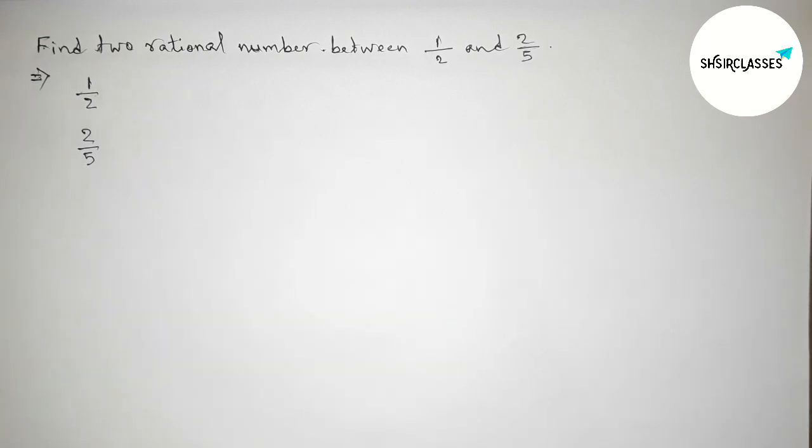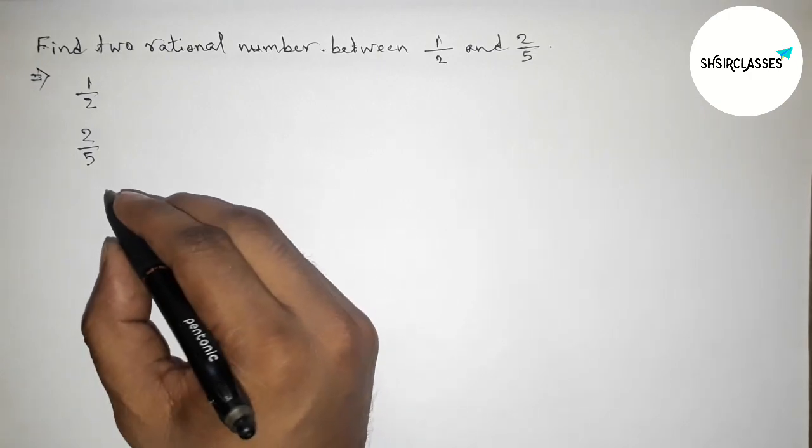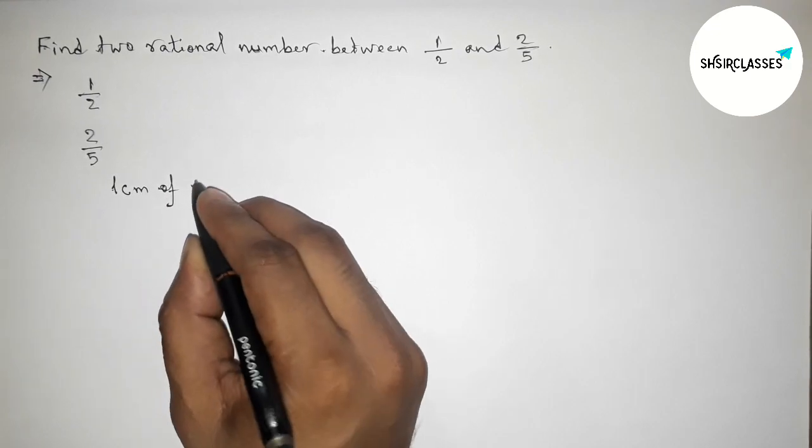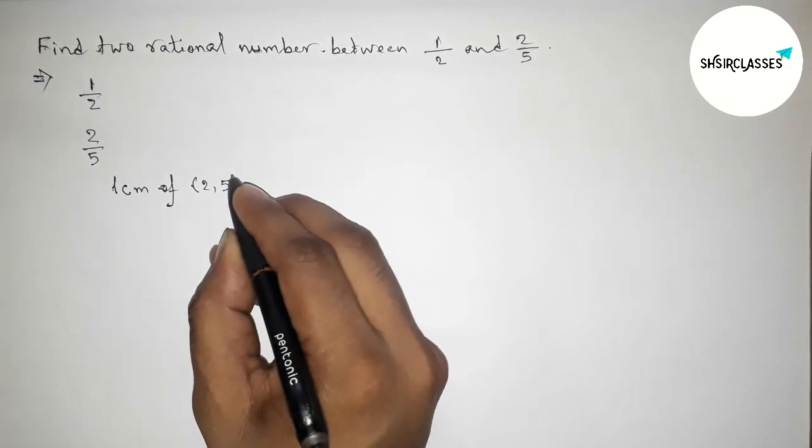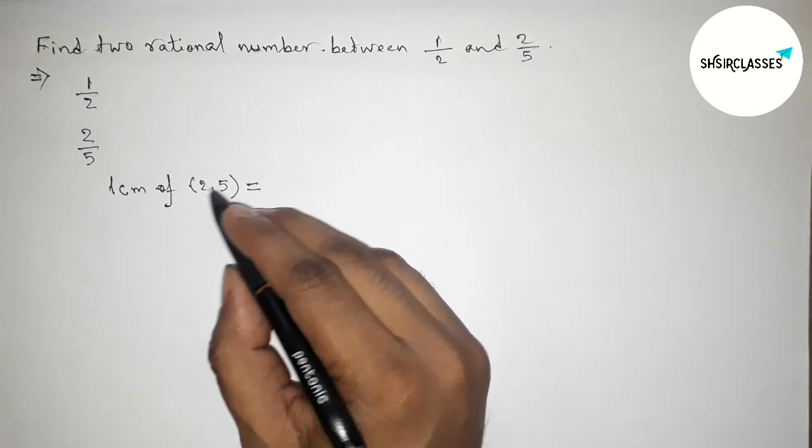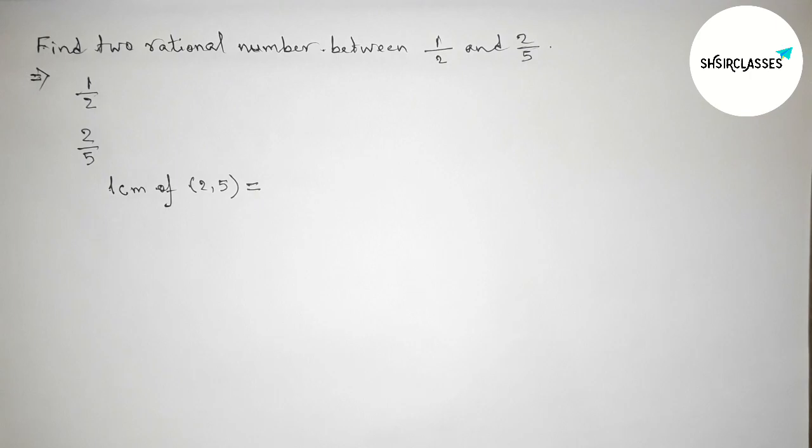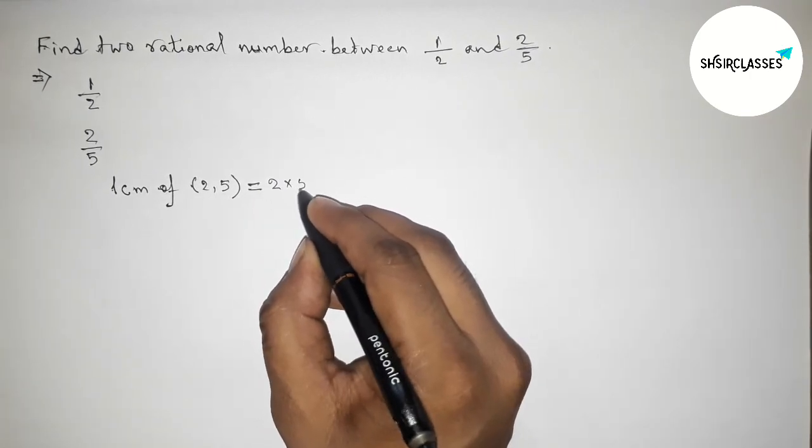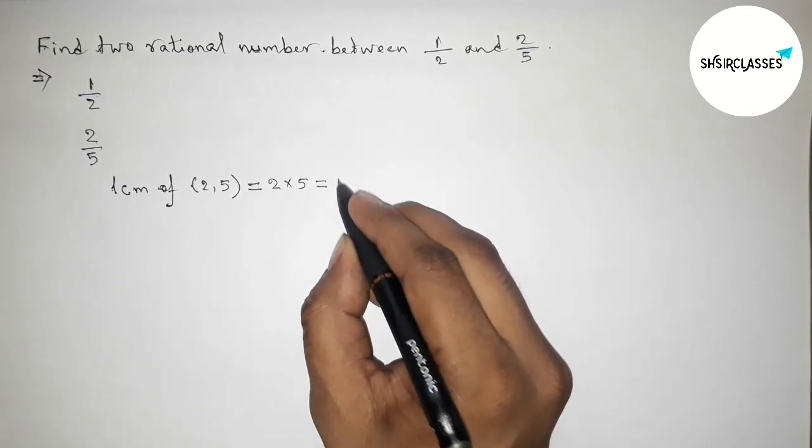So we have to find here LCM of 2 comma 5. First finding LCM of 2 comma 5, and we know that 2 and 5 are prime to each other, so their LCM will be the product of the two numbers. So this is 2 into 5, that is 10.